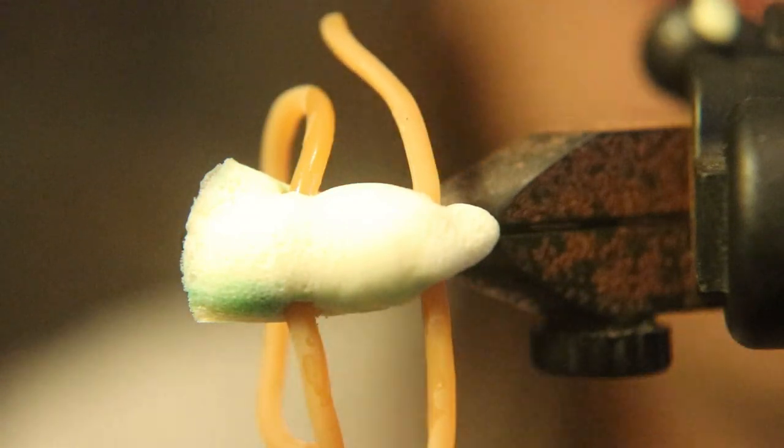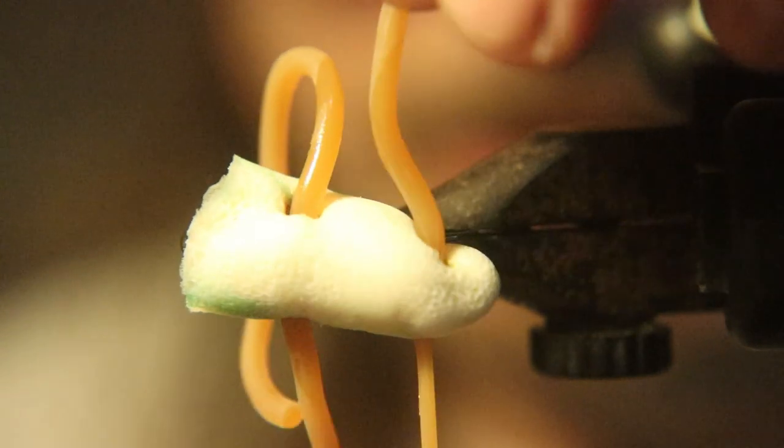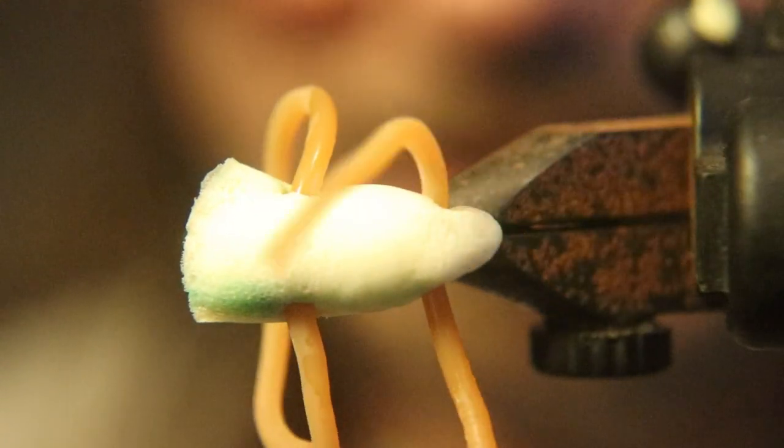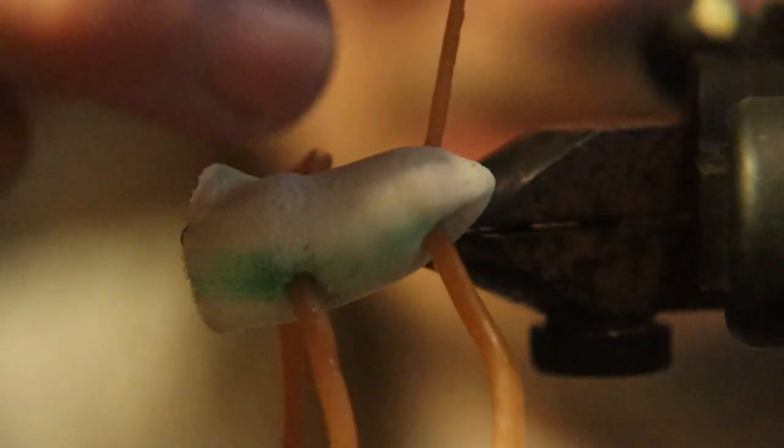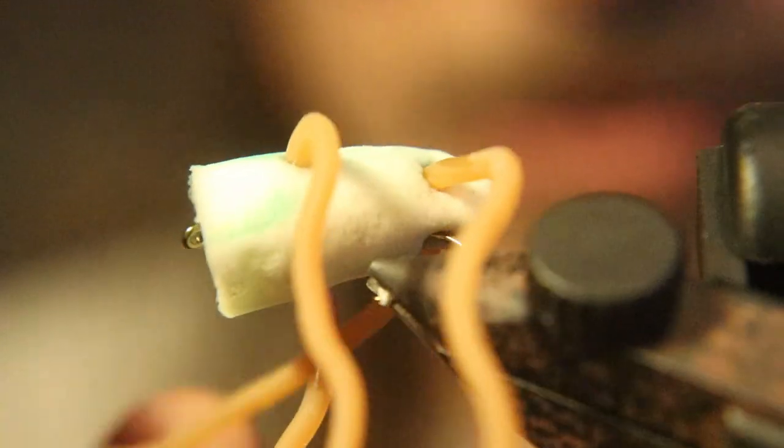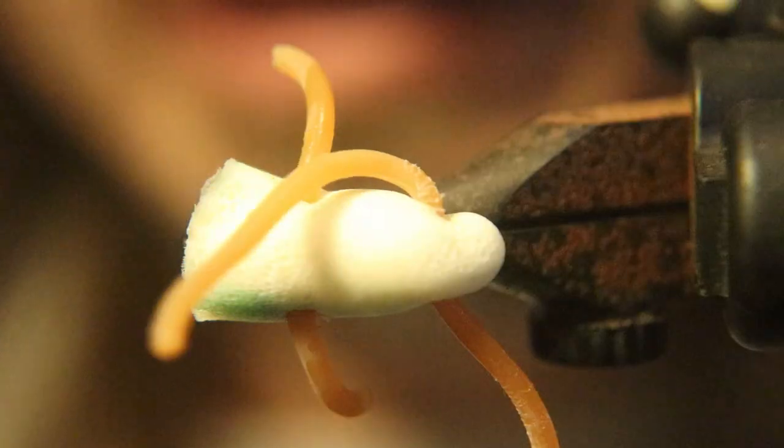So I trimmed the front legs to about an inch and a half and the back legs to about three to four inches.